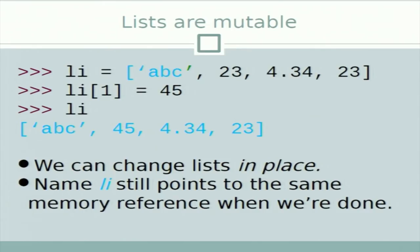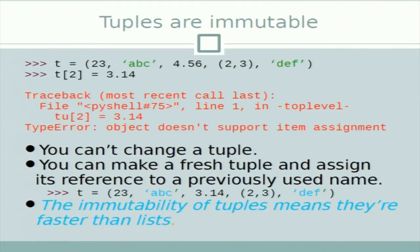Mutability — tuples versus lists: lists are mutable but tuples are not. If we define a list 'L = ["A", "B", "C"]' and say 'L[1] = 45', the second item changes to 45 — lists are mutable and we can change them in place. But tuples are immutable: if we try to assign 'T[2] = 3', Python returns an error — 'object does not support item assignment'. You cannot change a tuple in place; you must make a fresh copy. The immutability of tuples makes them faster than lists.